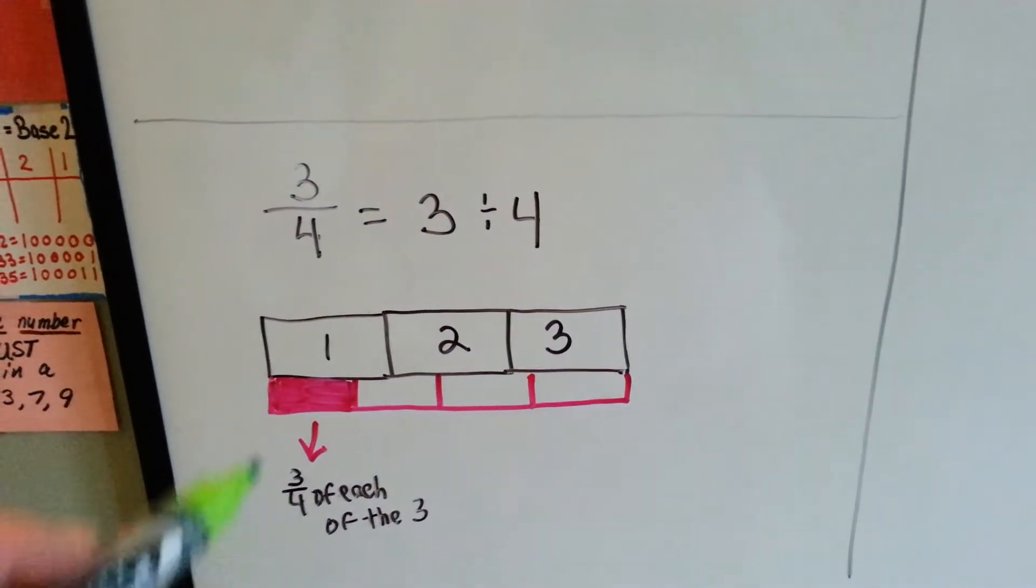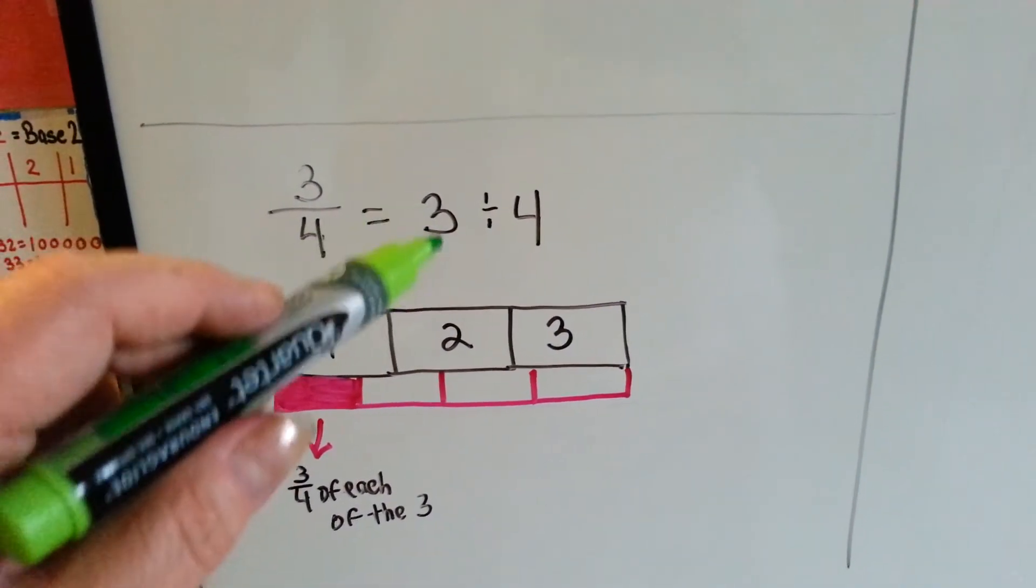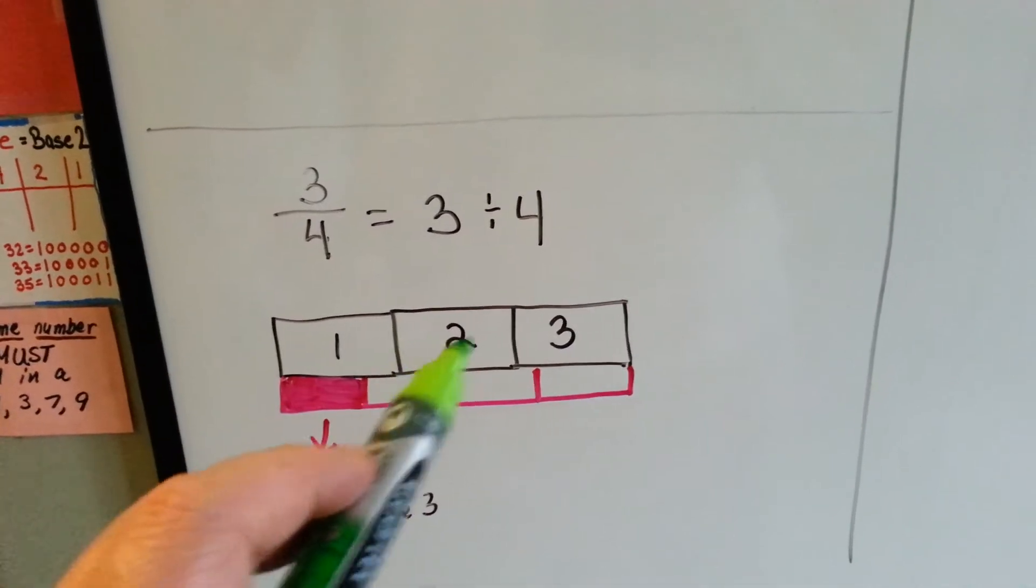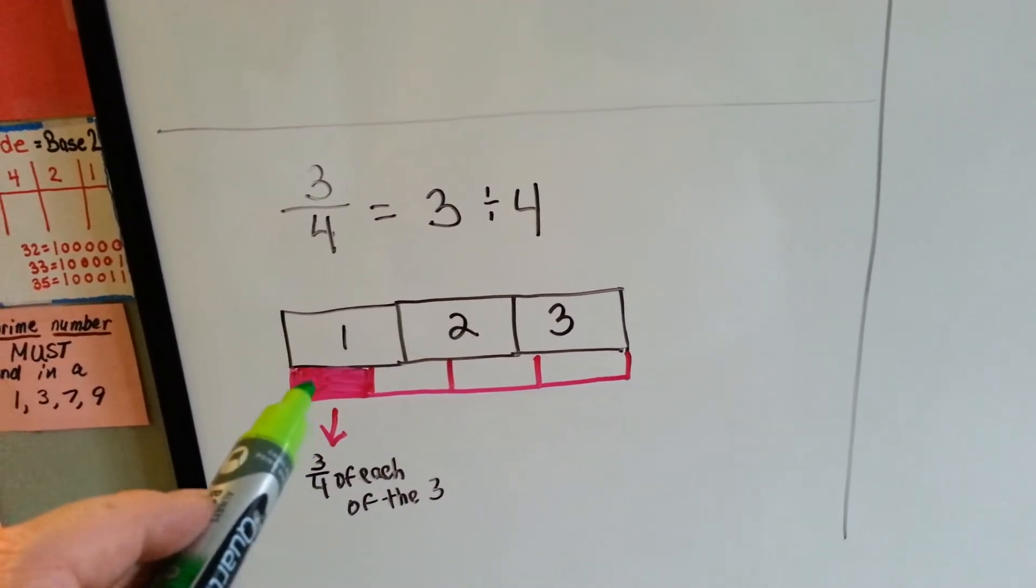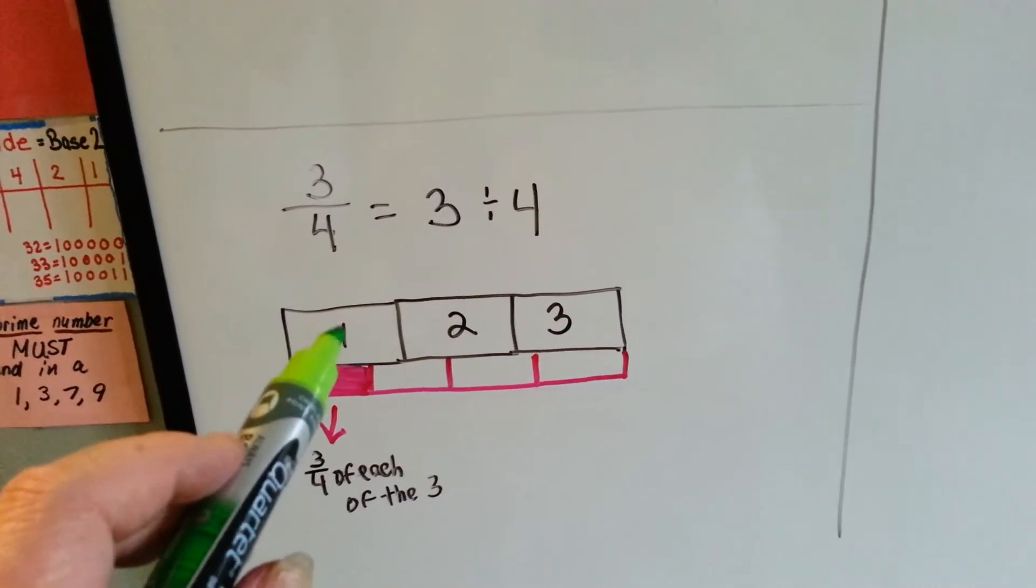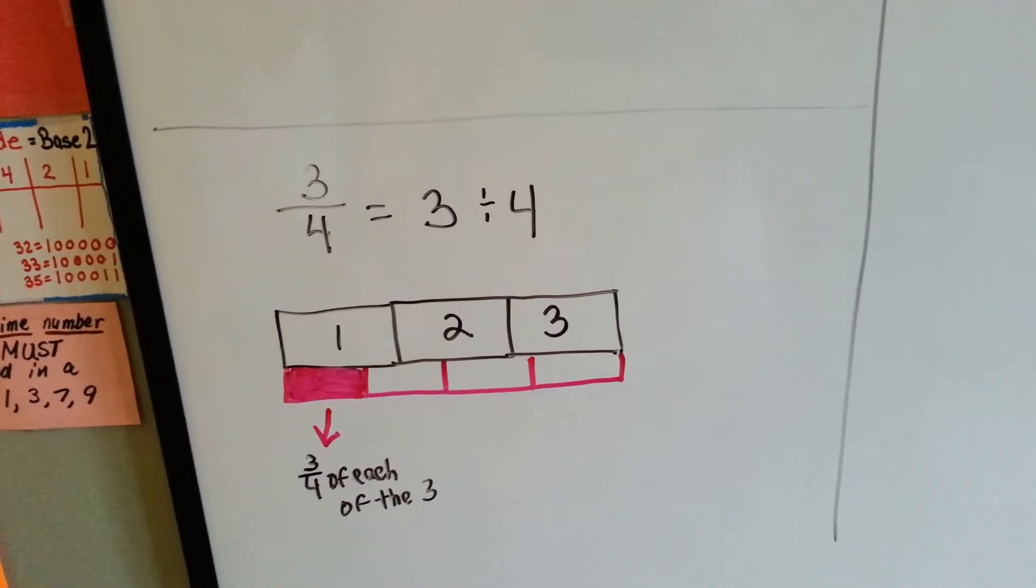If we had three fourths, it's the same thing as saying three divided by four. If we had three bars and we split them into four parts, each part would be three fourths of one of these full bars. Isn't that something?